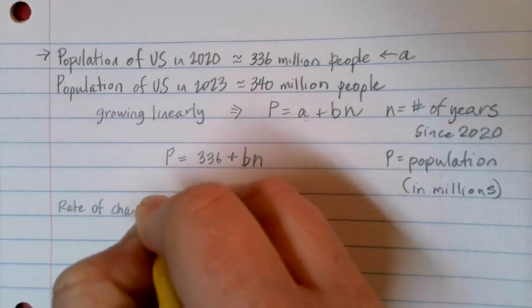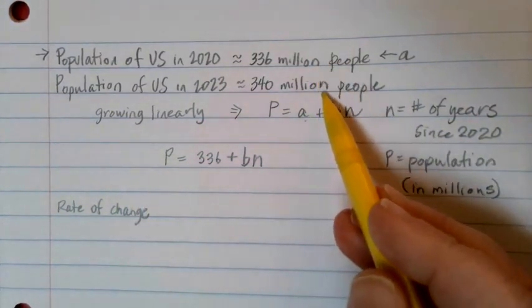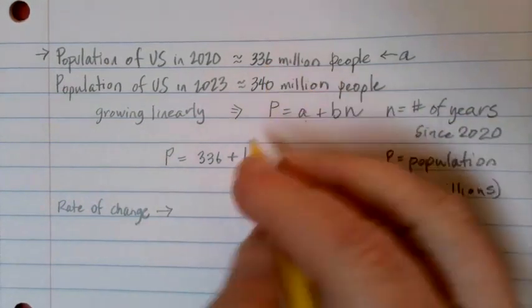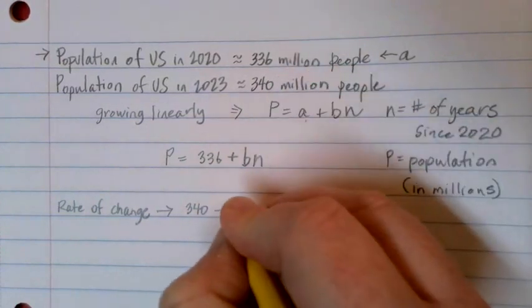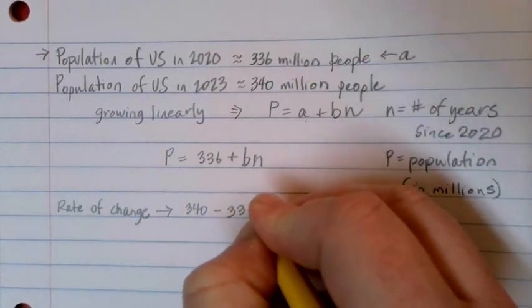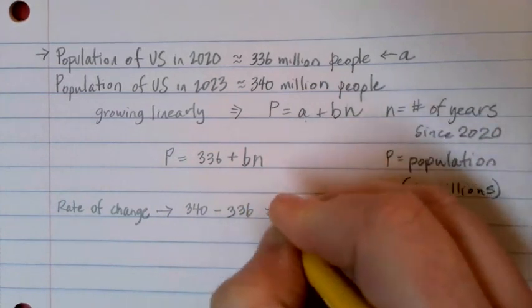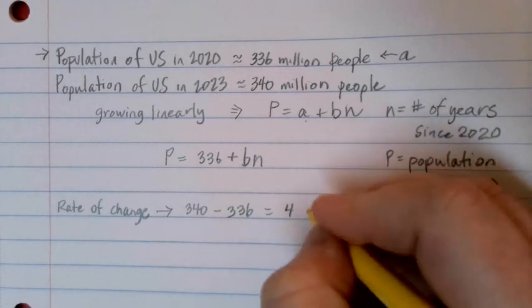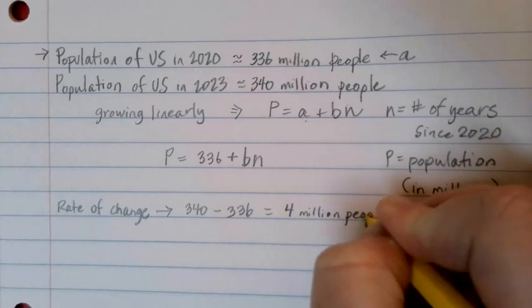All right, well, let's do that. Our rate of change is going to be how many more million people per year are we adding? So first, let's figure out the change. We went from 340 million or got to 340 million from 336 million. If we subtract that, we'll see that we had a change of 4 million people over that period of time.